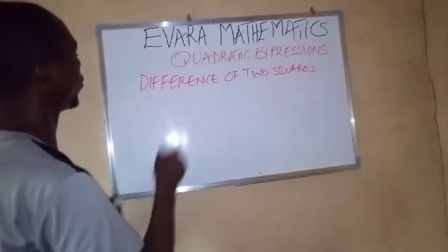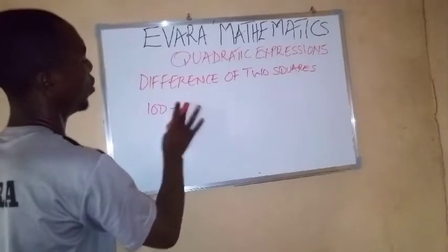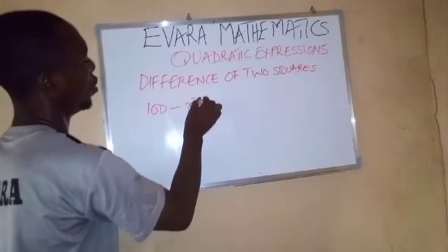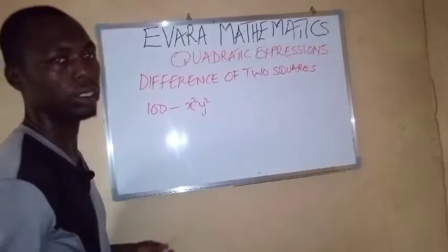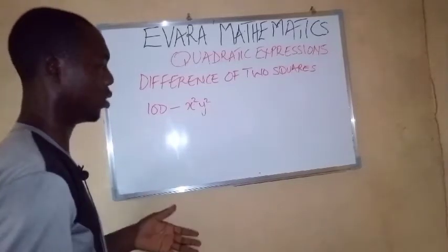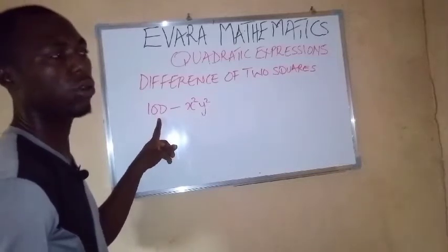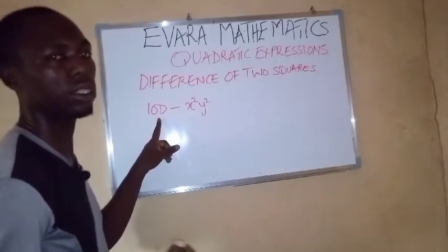Now, if we have something like this, 100 minus x squared y squared. Can we still use difference of two square for this? Yes. Because this 100 is a perfect square. What is the square root of 100? 10.